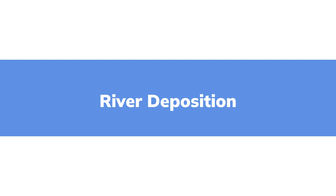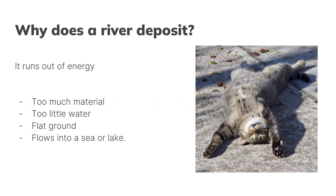Let's look then at river deposition. Why does a river deposit? Because it runs out of energy, and it does that in four scenarios: when it has too much material, when there's too little water, when it reaches flat ground, or when it flows into the sea.